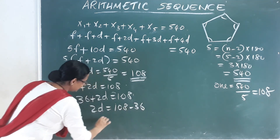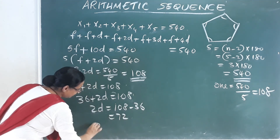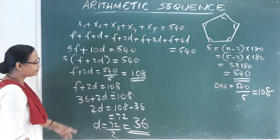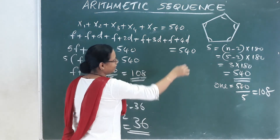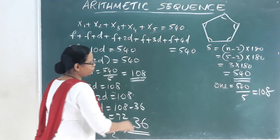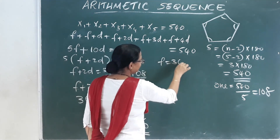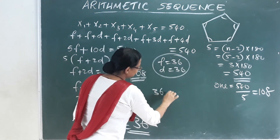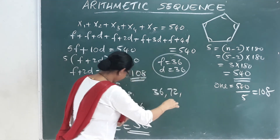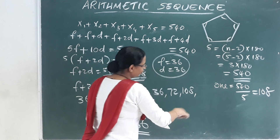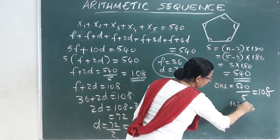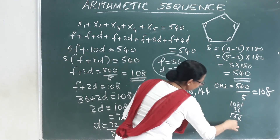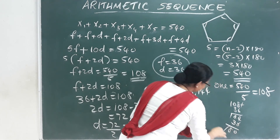Now, suppose the common difference is 36. Then the five angles would be 36, 72, 108, 144, 180. But 180 is a straight angle, which means it cannot be an interior angle of a closed polygon like a pentagon.